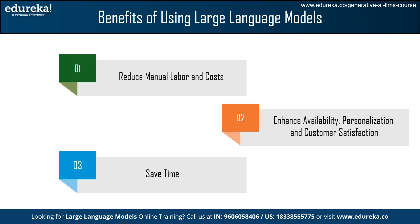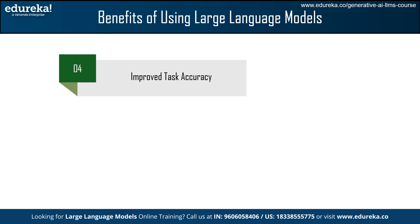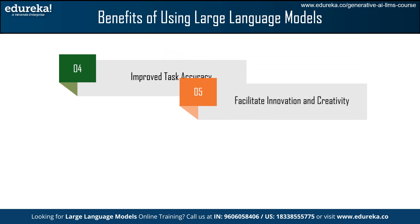The third benefit is saving time. Large language model systems automate data entry, customer support, and other marketing and sales processes, allowing employees to concentrate on duties requiring human expertise. Moving forward, we have improved task accuracy. Because LLMs are adept at handling large volumes of data, they produce better results for tasks like classification and predictions. Learning patterns and correlations from data helps LLMs create more accurate classifications and forecasts. For example, in sentiment analysis, LLMs can examine a large number of customer reviews to ascertain the sentiment underlying each one precisely, which is important for companies that place a high value on accuracy.